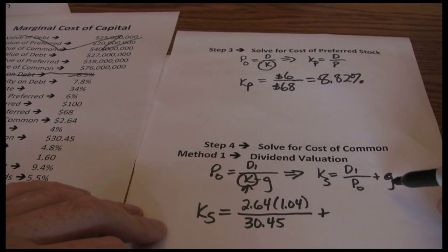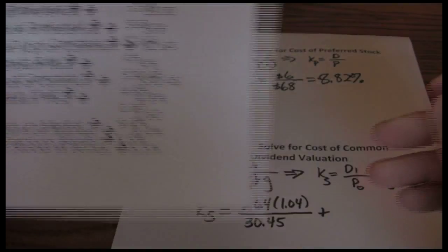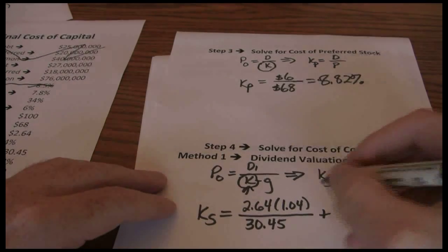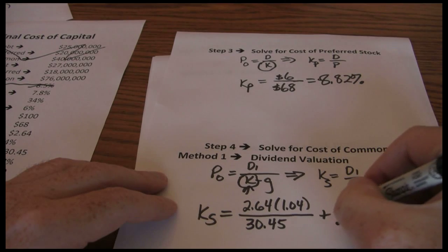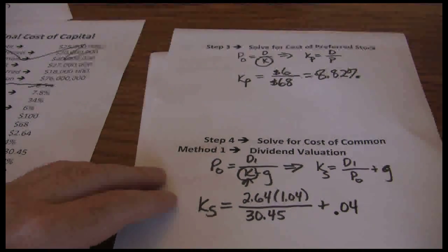And then we want to add in the growth rate. Growth rate we said was 4%. Be careful here. We want to add that in as a decimal not a percentage. So 4% is 0.04.